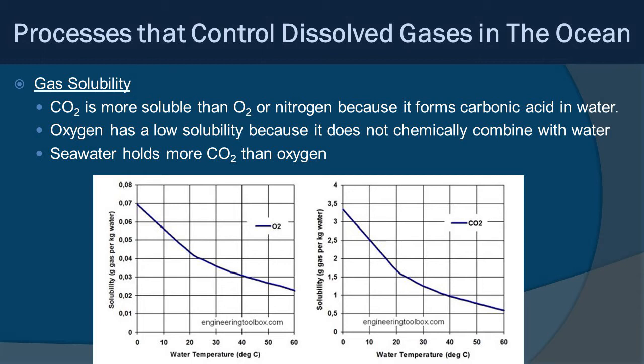Oxygen has low solubility because it doesn't chemically combine with water, so seawater holds more carbon dioxide than oxygen. If you look at these two graphs, the y-axis shows grams of gas per kilogram of water and the x-axis shows water temperature. The solubility scale for oxygen runs from 0.01 to 0.08 g/kg, while for carbon dioxide it runs from 0.5 up to 3.5–4 g/kg. The scales are larger for carbon dioxide because there's simply more CO2 dissolved in the water compared to oxygen.